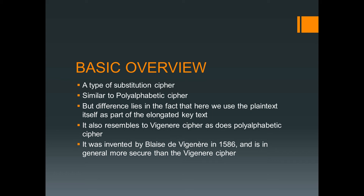In the case of the polyalphabetic cipher, the elongated key text or the intermediate text was formed by all the letters of the key repeating again and again. But in the case of the auto key cipher, the intermediate text will be formed by first taking all the characters or letters of the key and then filling the remaining slots with the characters of the plain text.